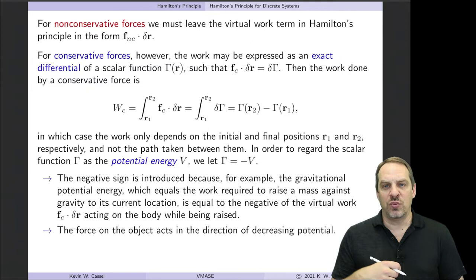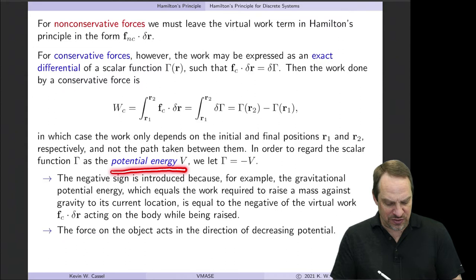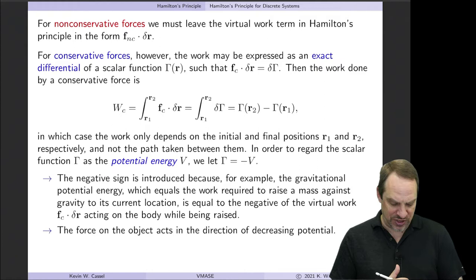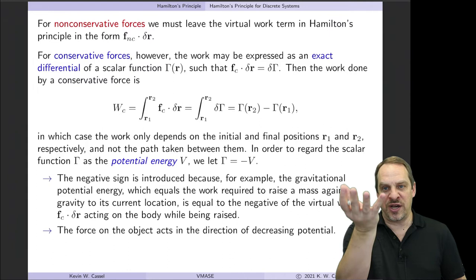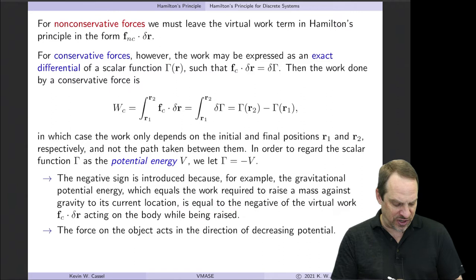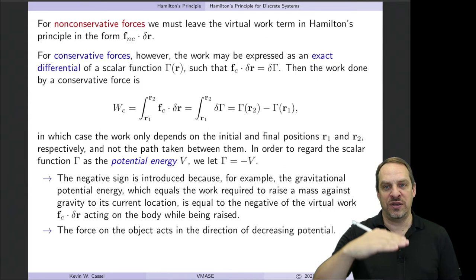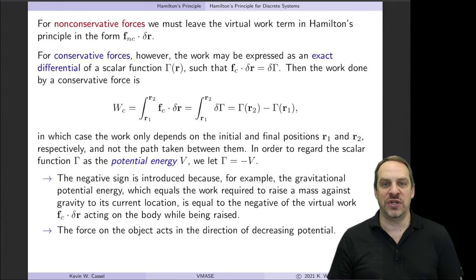The potential energy V we're going to take as the negative of Γ. This generic scalar function exists because there is an exact differential, and we call it the negative of the potential energy. The negative sign is introduced, for example, because gravitational potential energy — the work required to raise an object against gravity to its current location — equals the negative of the virtual work F·δR required to raise it. More simply: the force on the object, for example gravity pointing down, is in the direction of decreasing potential. Potential energy due to gravity increases as you increase height, which is opposite to the direction of the force.